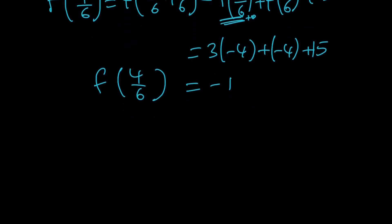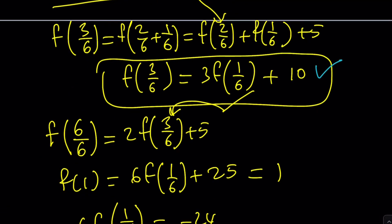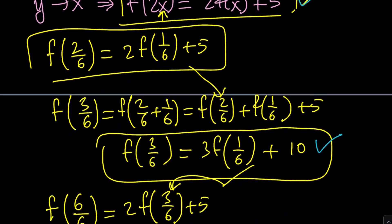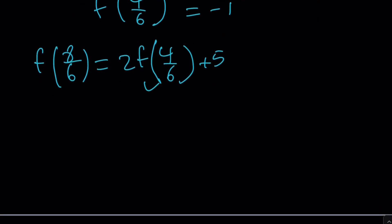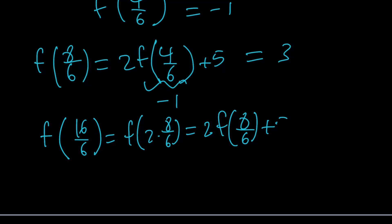Let's evaluate f of 8 over 6 by doubling. The doubling formula gives 2 times f of 4 over 6 plus 5. Since f of 4 over 6 is negative 1, that's 2 times negative 1 plus 5, which is positive 3. So f of 8 over 6 is positive 3. Now let's go to f of 16 over 6 — that's 2 times f of 8 over 6 plus 5, which is 2 times 3 plus 5, giving us 11. So f of 16 over 6 equals 11.